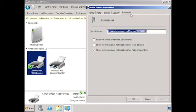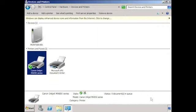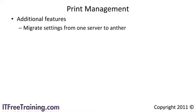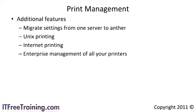On the Advanced screen, you can change the spool directory for the server. If you change the location of the spool directory, make sure the hard disk has enough free space to hold all your waiting print jobs. If you want to use the additional management features in Windows Server 2008, you will need to install the printing role. These additional features include migrating settings from one server to another, Unix printing, Internet printing, and enterprise management for your printers. If you have a large network over many sites with many printers, you will definitely want to look at what this role can do for you.